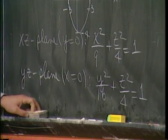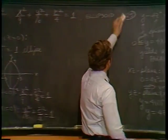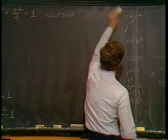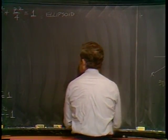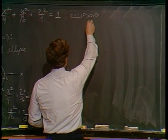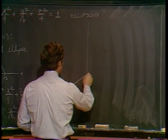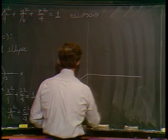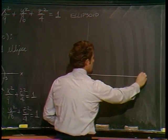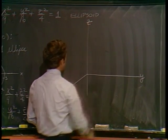So we have similar ellipses in the three coordinate planes. Well, they're all different shapes.